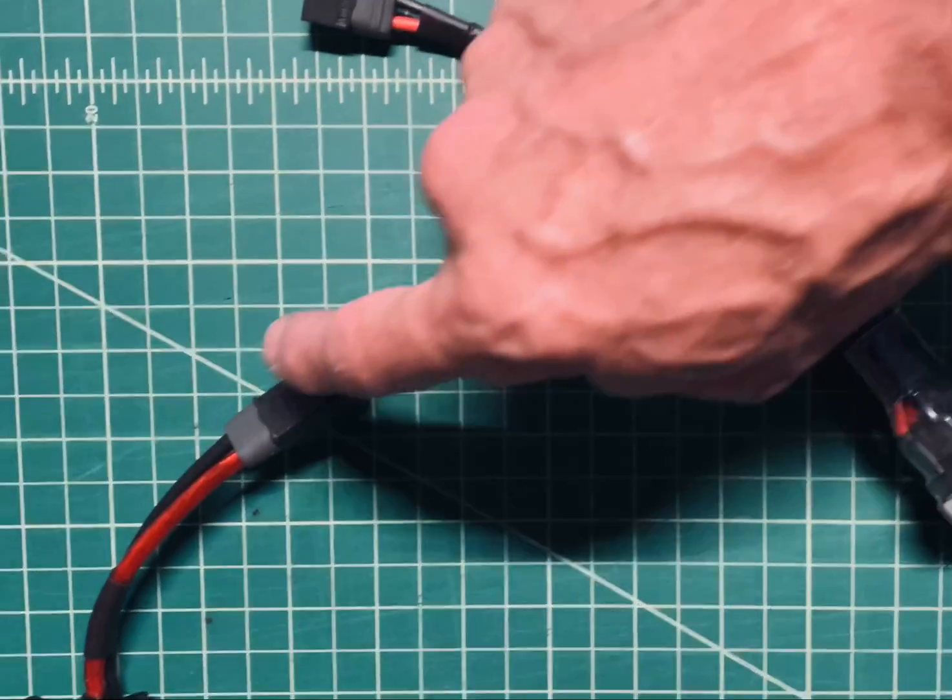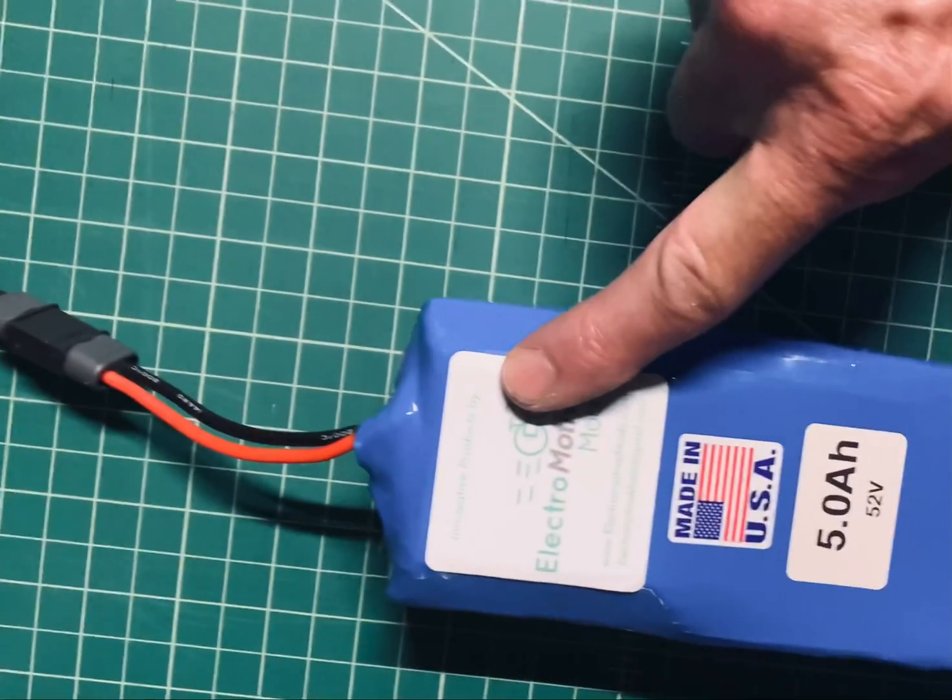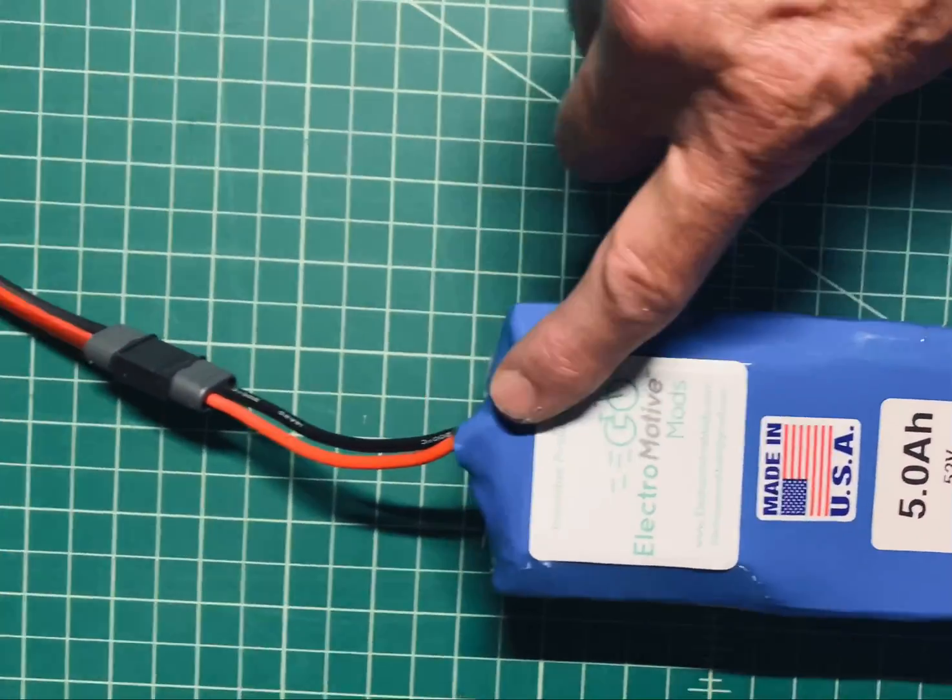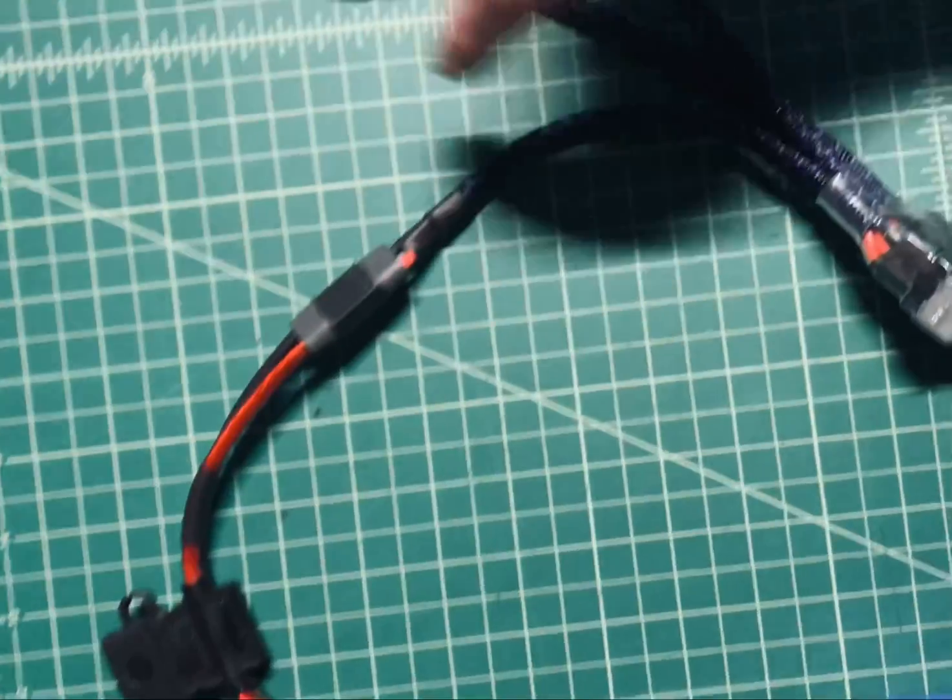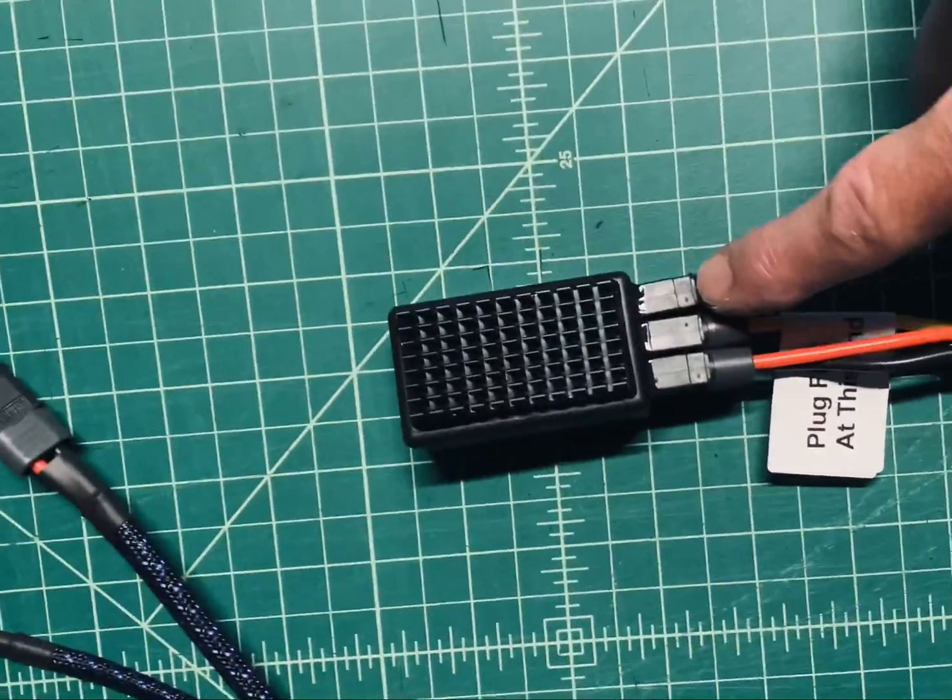From that switch it goes through the fuse that I supply with all batteries and then to the battery. So here's the battery, the fuse, it goes through this switch into one side of the FBC.